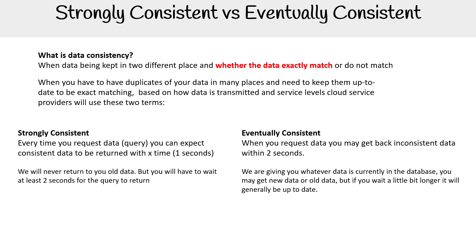Why would we have these two methods? It just depends on your use case. Maybe you can tolerate some data being inconsistent, and it's more important to get whatever data is available now. But sometimes you need an absolute guarantee that the data is one to one. So those are the two different ones.